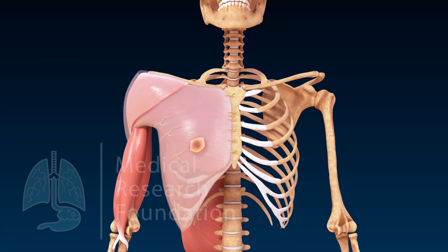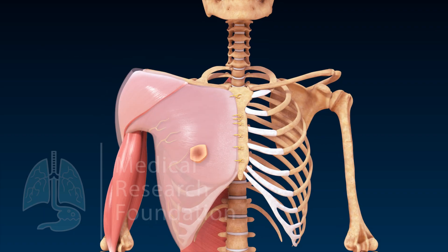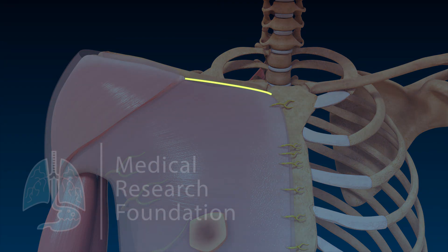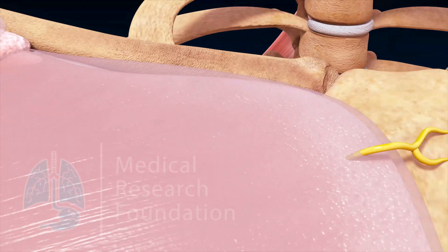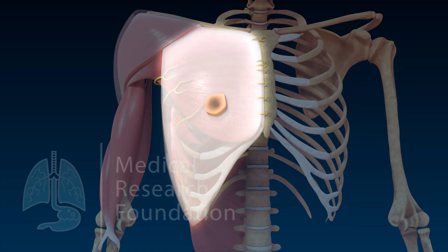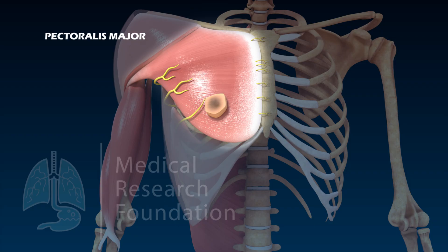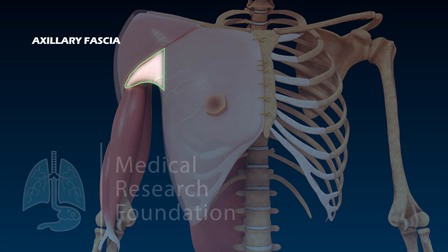The deep fascia of the pectoral region is also called the pectoral fascia. It is attached to the clavicle above and the sternum medially. The pectoral fascia envelops the pectoralis major and extends towards the axilla to form the axillary fascia.